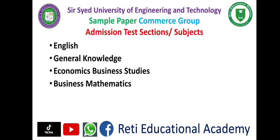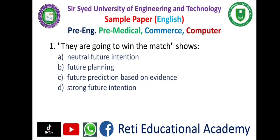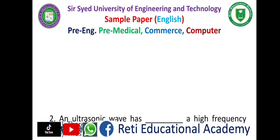Preparation material on English and General Knowledge playlist links are given in the description box. Question number one: 'They are going to win the match' shows — A) future intention, B) future planning, C) future prediction based on evidence, D) strong future intention. The correct answer is C, future prediction based on evidence.